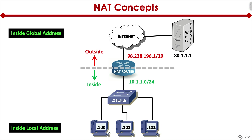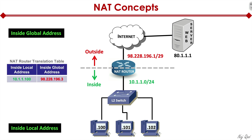The next critical term is inside global address. The IP address 98.228.196.1 on the outside of our router is considered an inside global address. It's inside because it's within our jurisdiction, our administration, and our control — but it's globally routable. When the router creates a NAT translation table, it maps the inside local address to the inside global address, and you'll see that exact terminology in show commands. That's how the router keeps track of all traffic going through it.